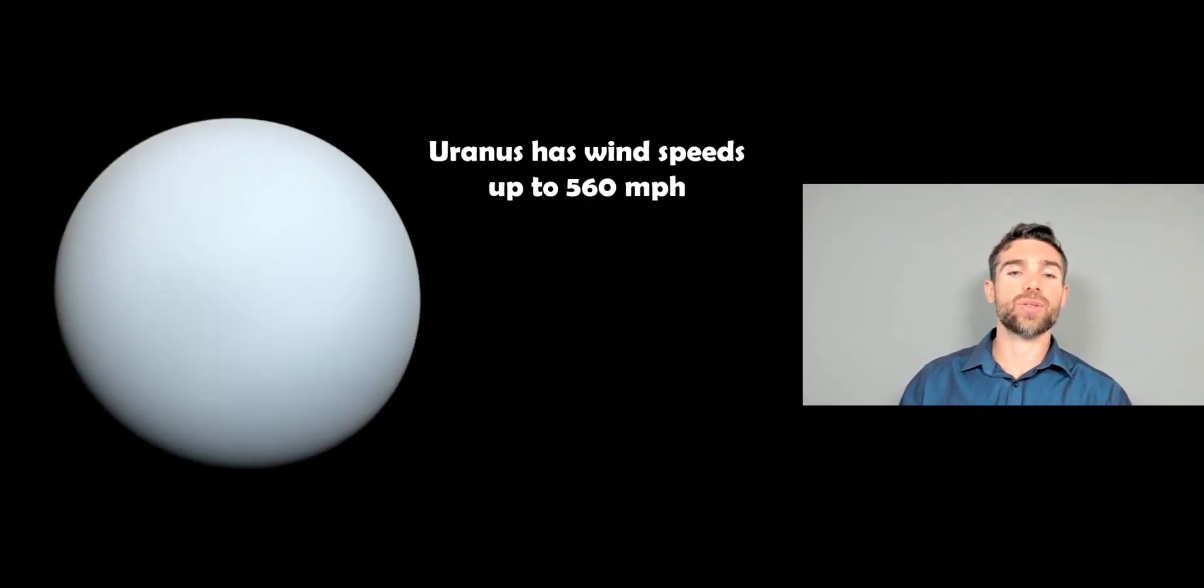Now, Uranus, the next one out, actually has fairly low wind speed in comparison to the first two, Jupiter and Saturn. They're up to about 560 miles per hour. So quite low, really. But we have to also consider that we're getting further away from the Sun now. So there's less sunlight reaching these planets. So they have less energy to power those particular storms, if they do have any.